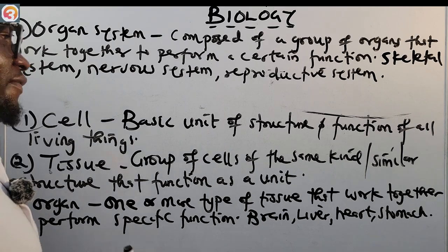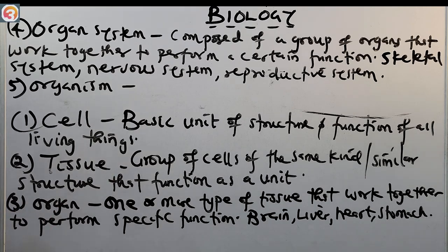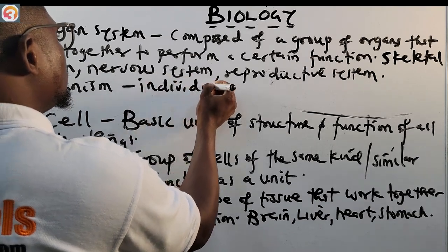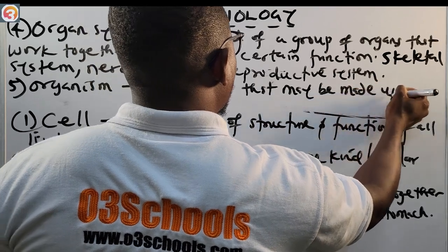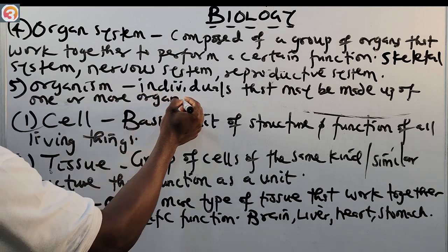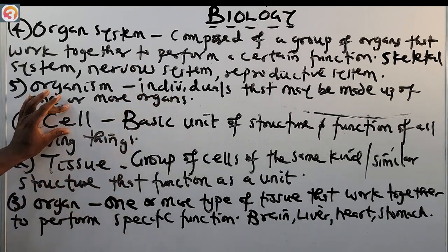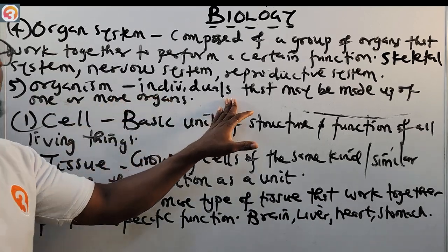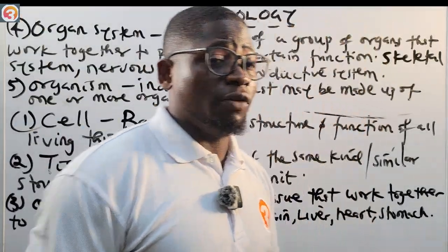Number five is the organism. The organism refers to individuals that may be made up of one or more organs. So the full sequence in the organization of life is: cell, tissue, organ, organ system, organism. That is a simple explanation of the organization of life.